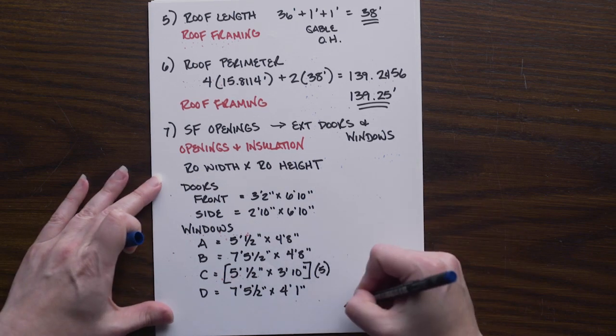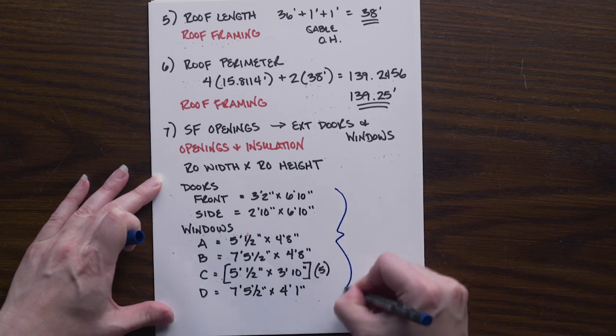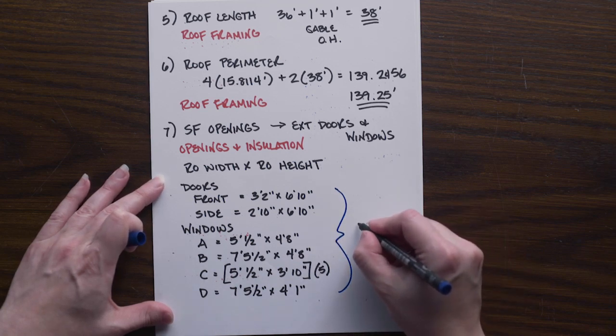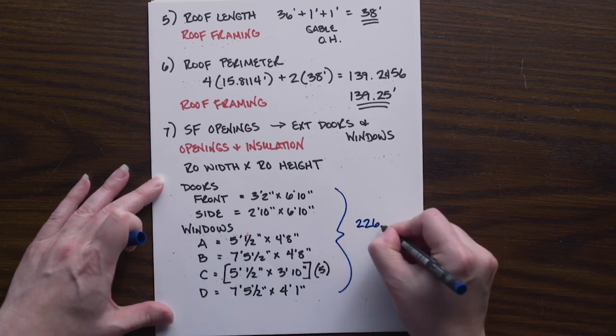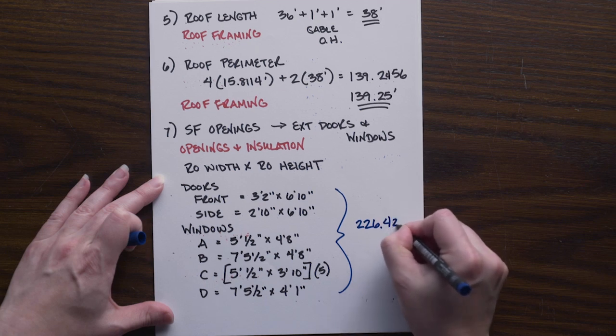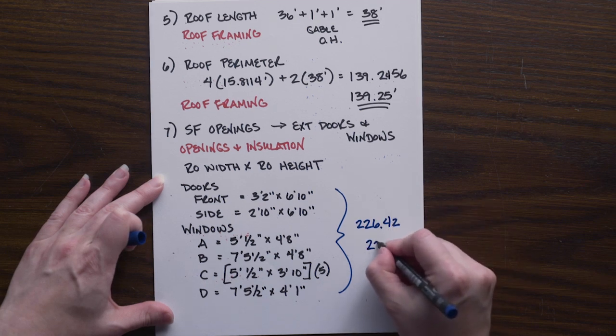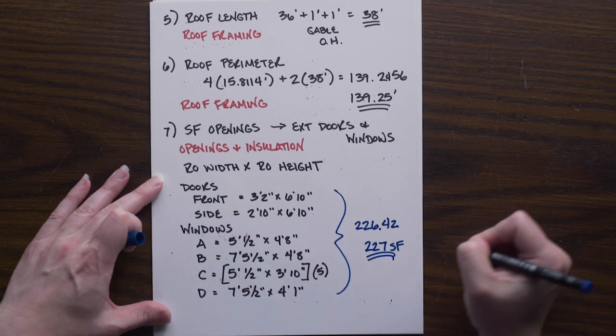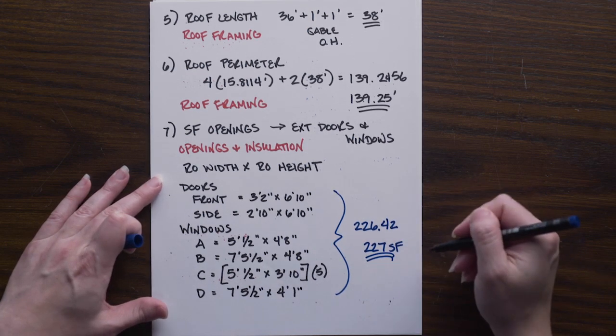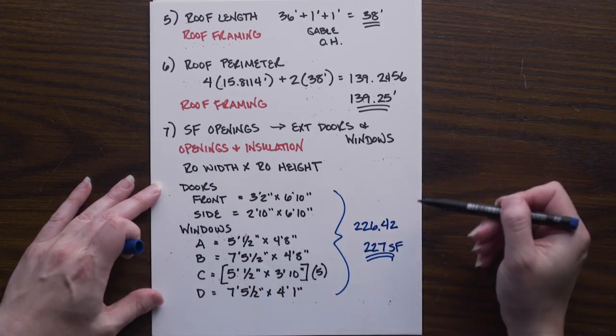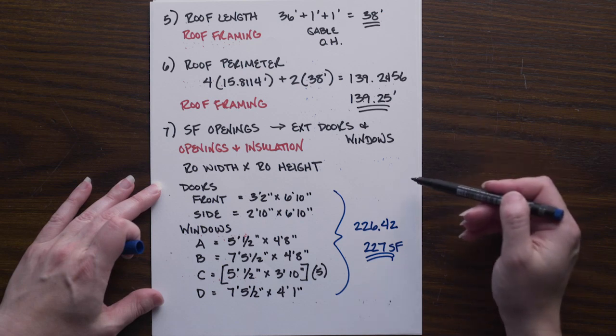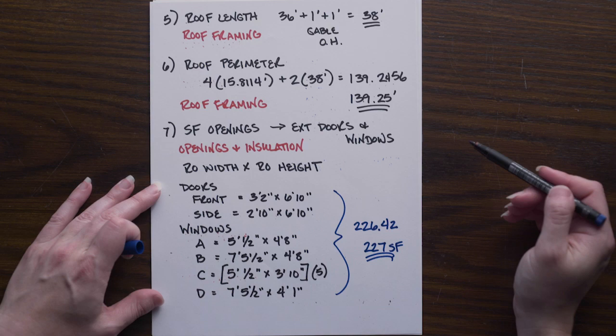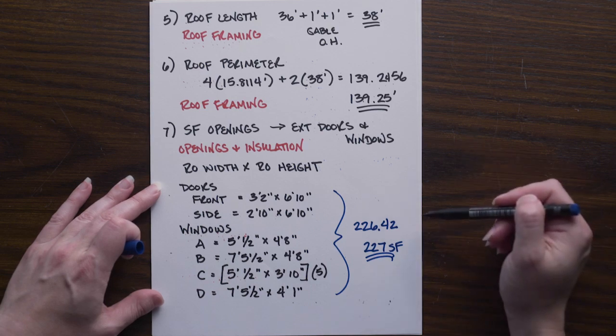So if we multiply all these out, add them all together, we got 226.42. So roughly 227 square feet of openings from all of these previous problem sets. So we will use all of these numbers one through seven in future calculations in both the second and the third problem sets.